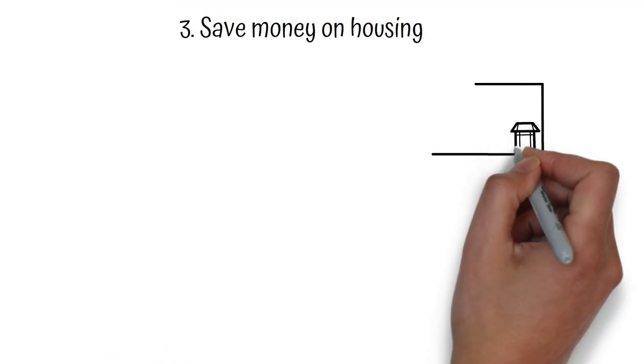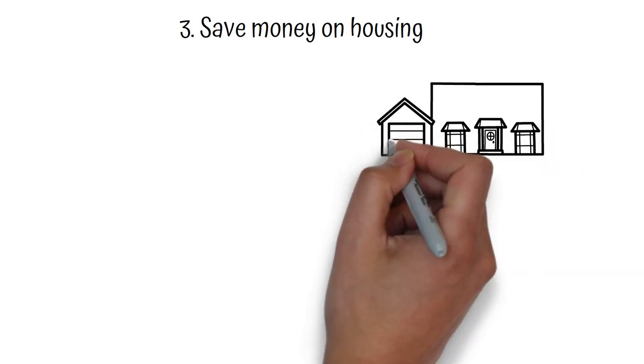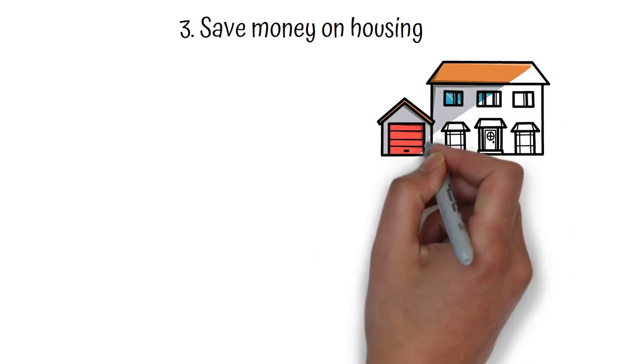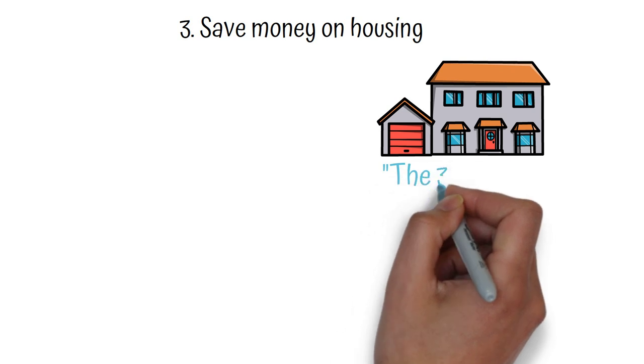Number 3. Save Money on Housing. A general rule of thumb is to aim to spend no more than 30% of your gross income on housing expenses, including rent or mortgage payments, property taxes, and insurance. This is often referred to as the 30% rule.